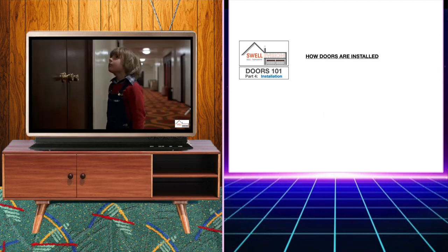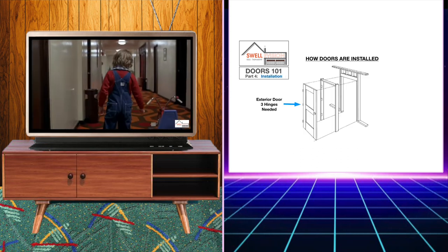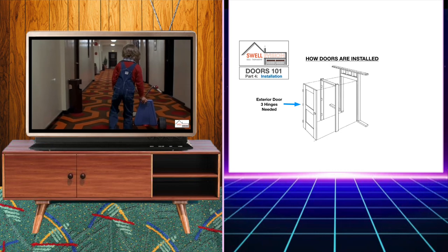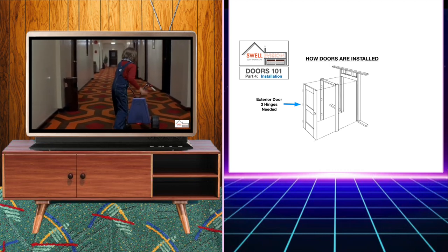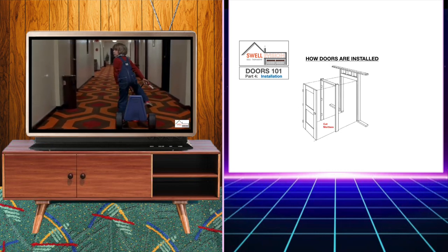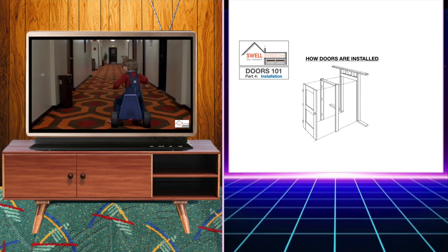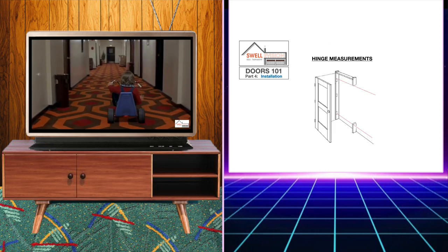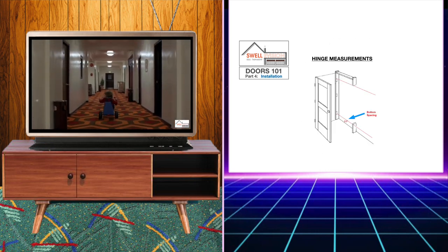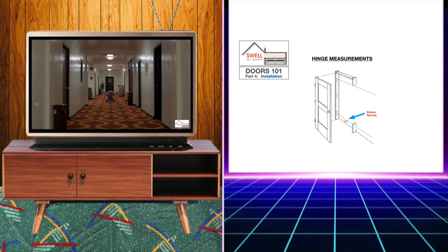Exterior doors require three hinges while interior doors typically only need two. For slab door hinge installation you will need to cut the mortises with a router or a chisel. The bottom spacing should be 11 inches, this is the distance from the bottom of the door to the bottom of the first hinge.